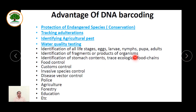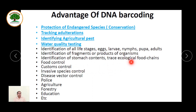It is usable by non-specialists. There are lots of advantages: it helps in tracking endangered species and conservation, tracking adulteration, identifying agricultural pests, water quality testing, identification of all life stages (egg, larvae, nymphs, pupae, adult), identification of fragments or products of organisms, identification of stomach content, tracing ecological food chains, food control, invasive species control, disease vector control, and applications in police work, agriculture, forestry, and education.